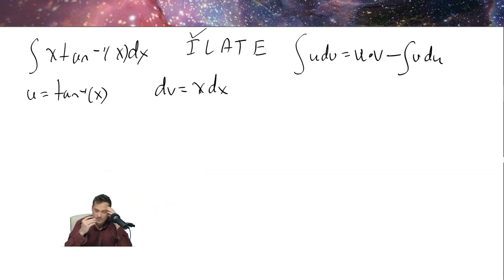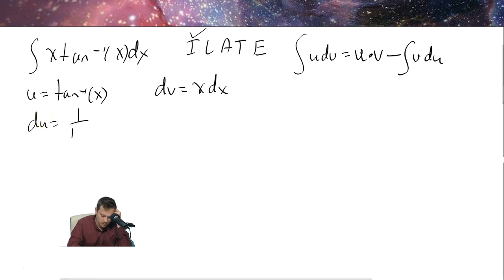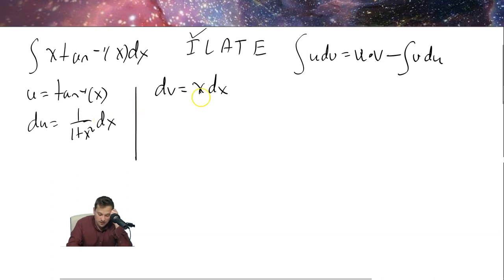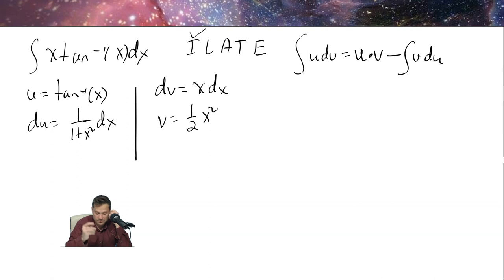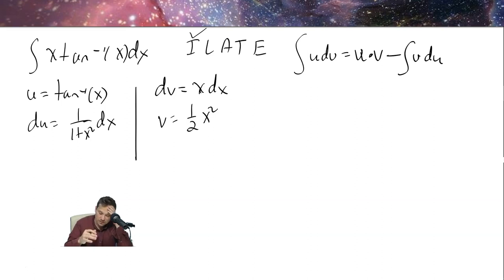With u = tan inverse of x, du equals 1 over (1 + x²) dx — that's the derivative of tan inverse. And dv = x dx is easy to integrate, so v equals one-half x squared. You want to choose dv so you can integrate it easily, and u so it's easy to differentiate.